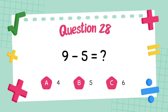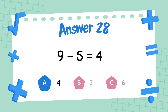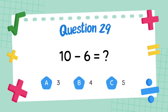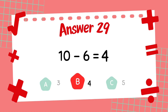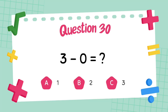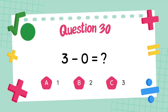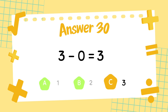What is 9 minus 5? The answer is 4. What is 10 minus 6? The answer is 4. What is 3 minus zero? The answer is 3.